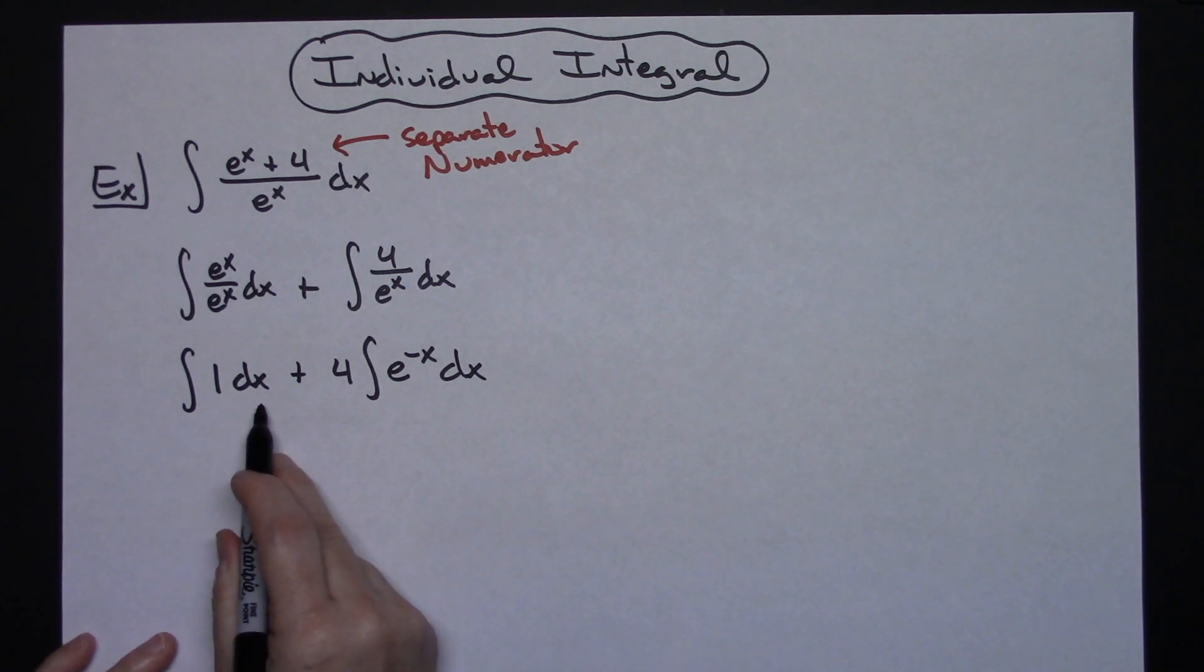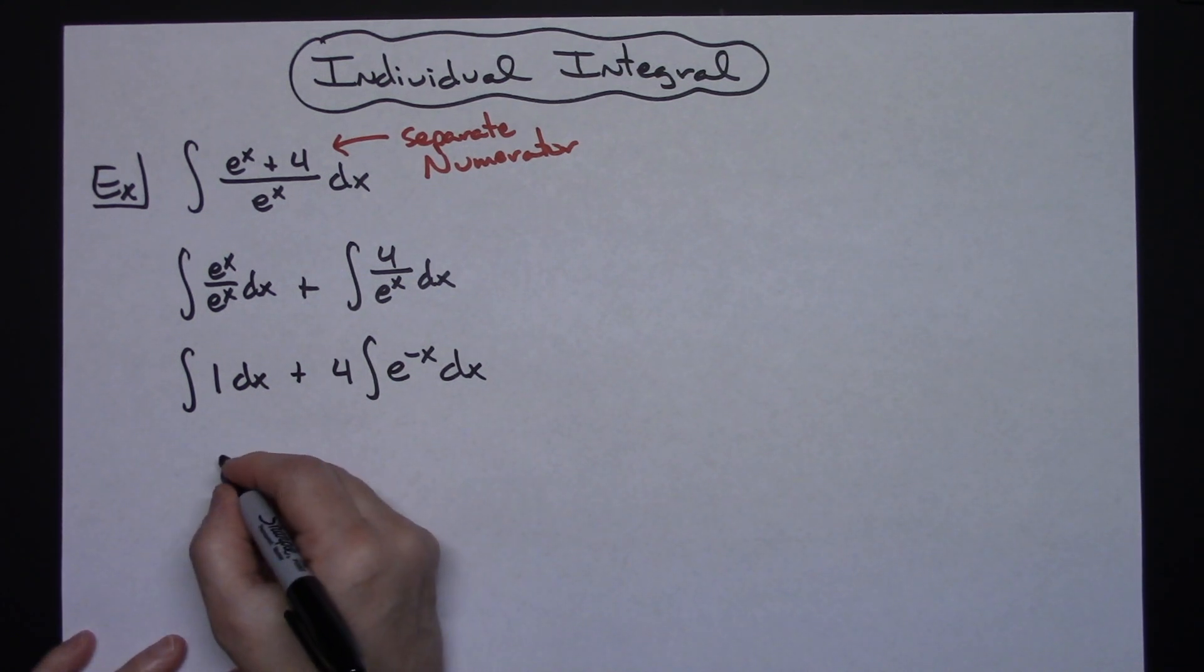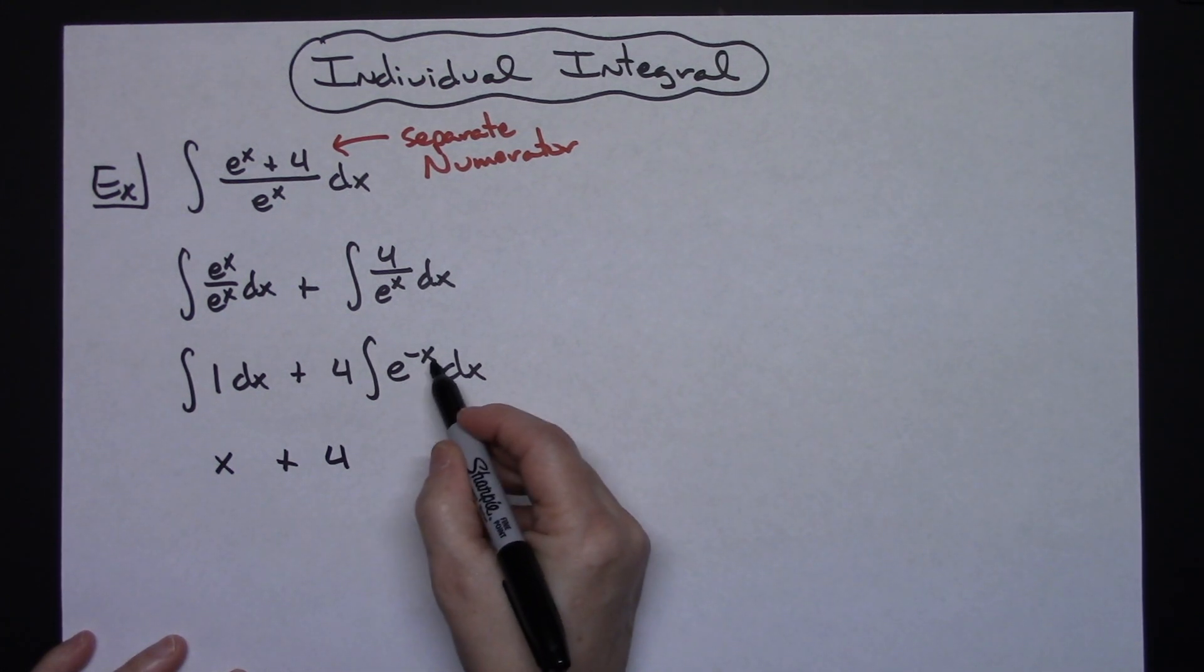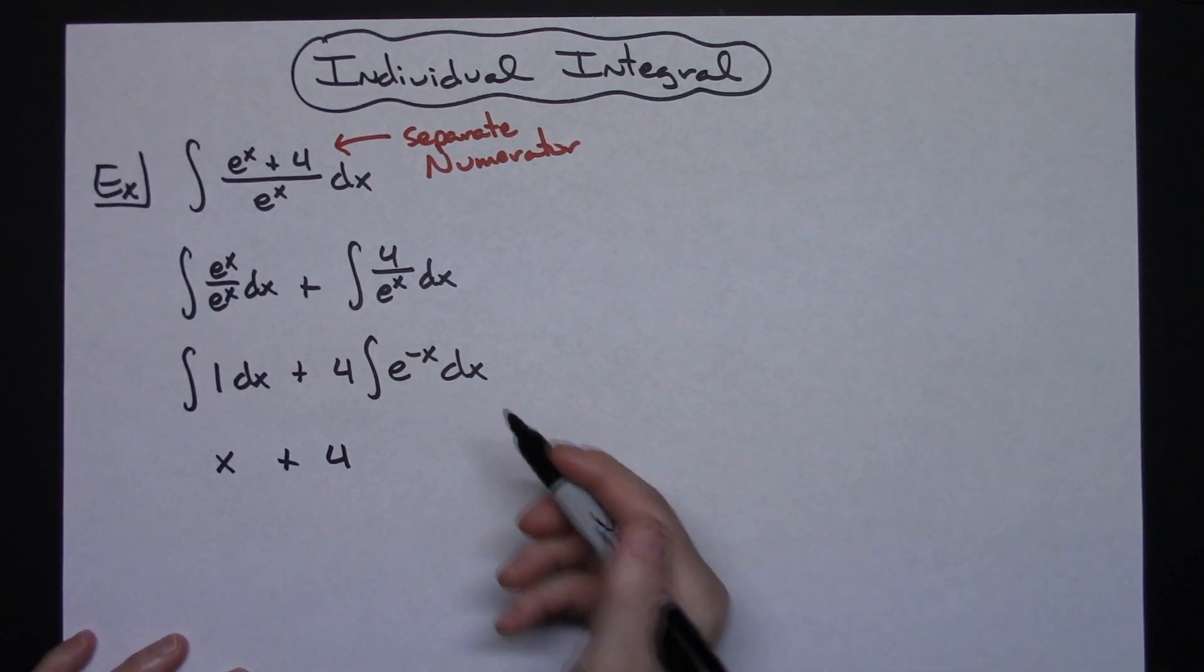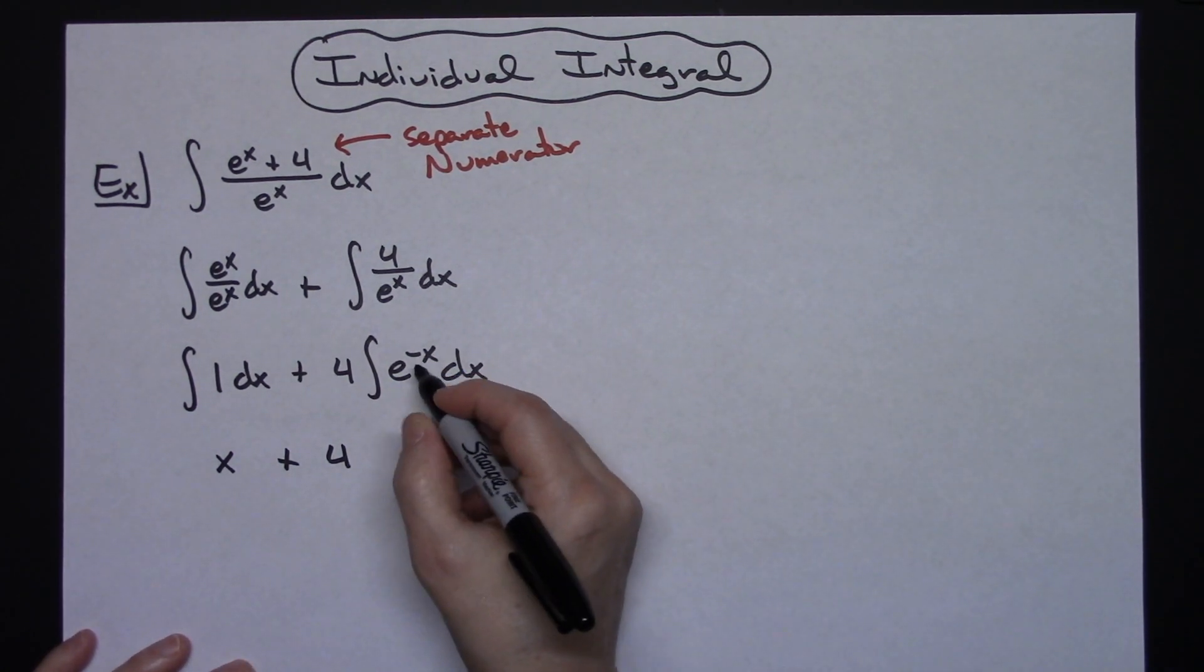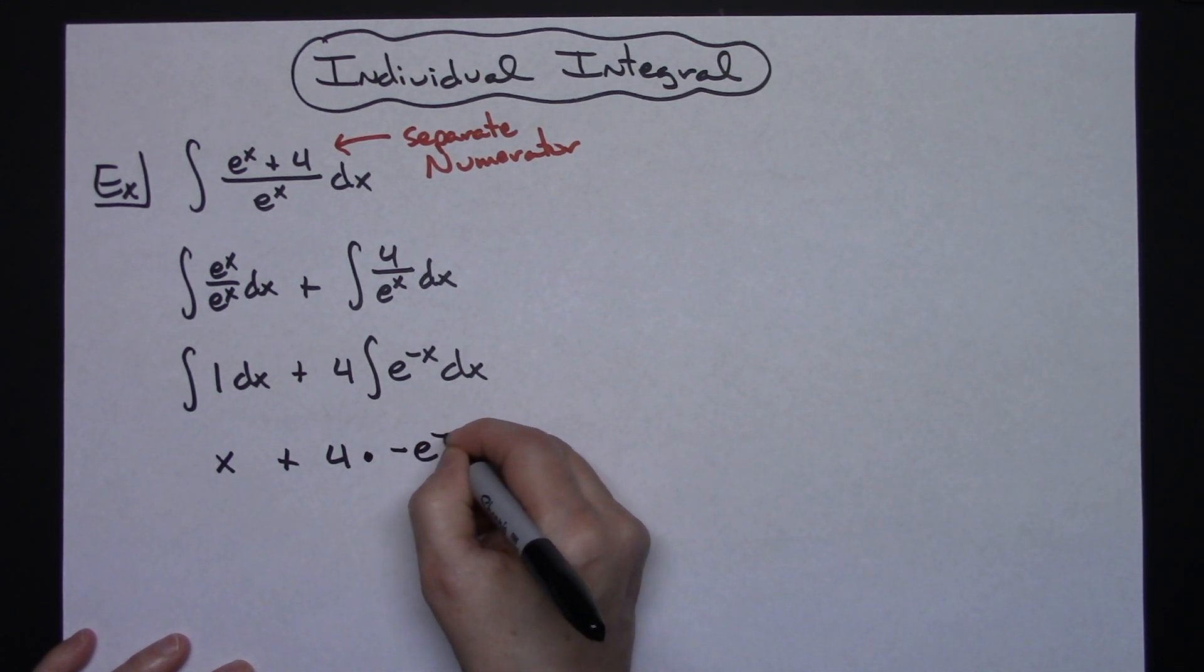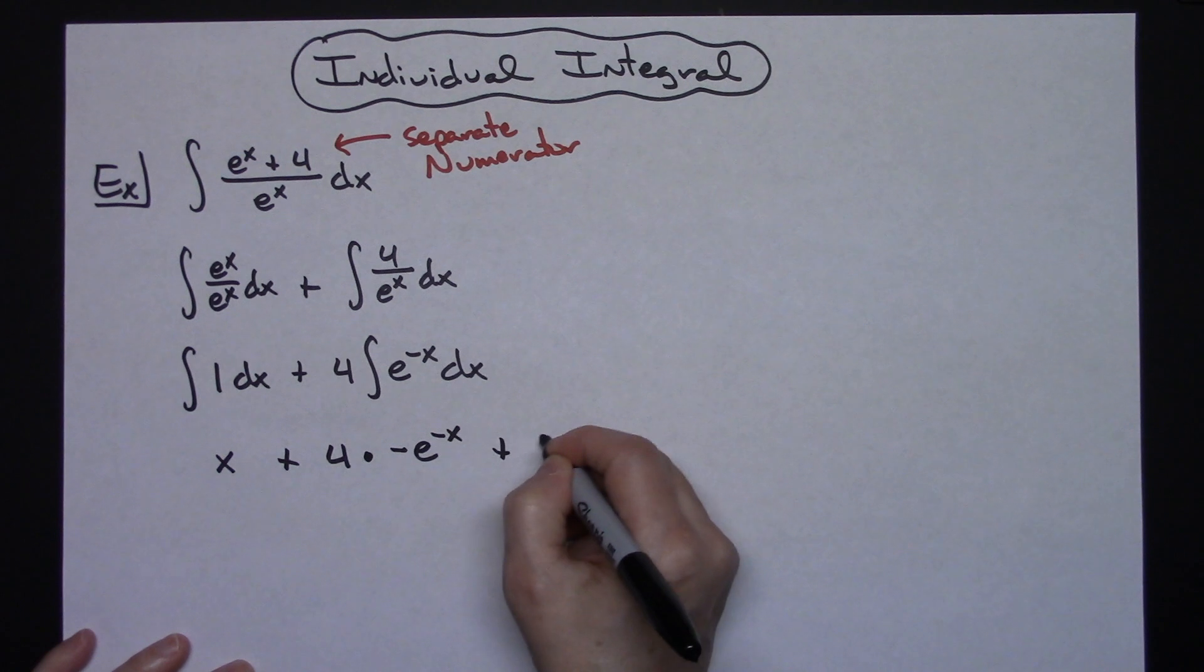When I integrate 1 with respect to dx, I'm just going to get an x. Plus a 4 here. Now when I integrate e to the u, I have an e to the u. And keeping in mind without actually showing a u substitution here, you're going to have a negative with that as well. So that would be times a negative e to the negative x and then plus c.